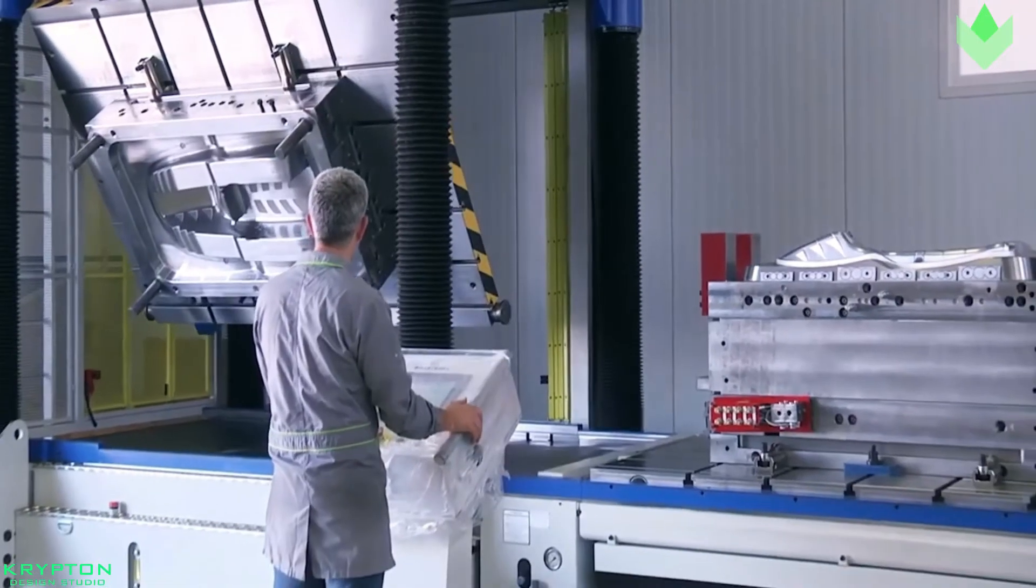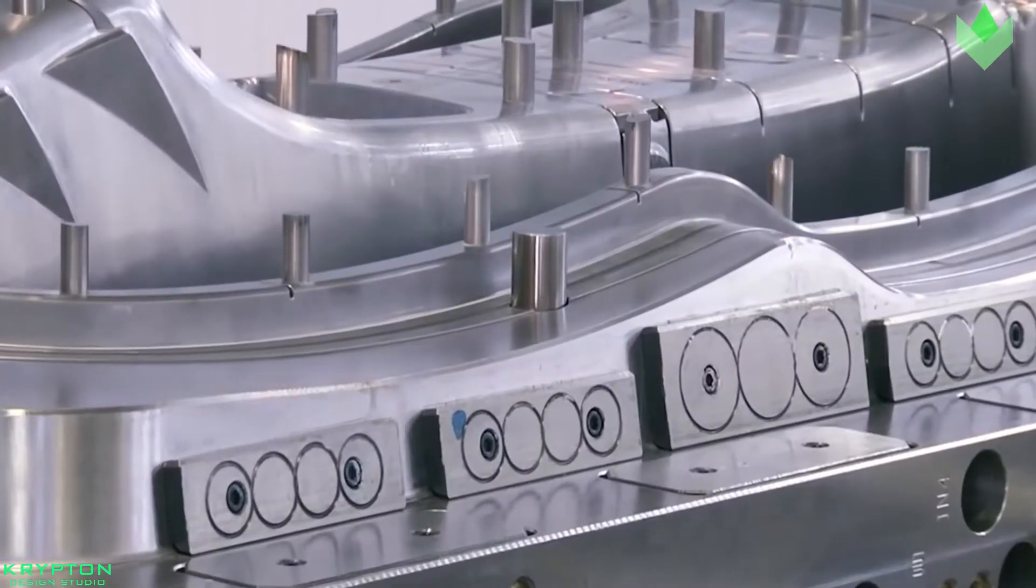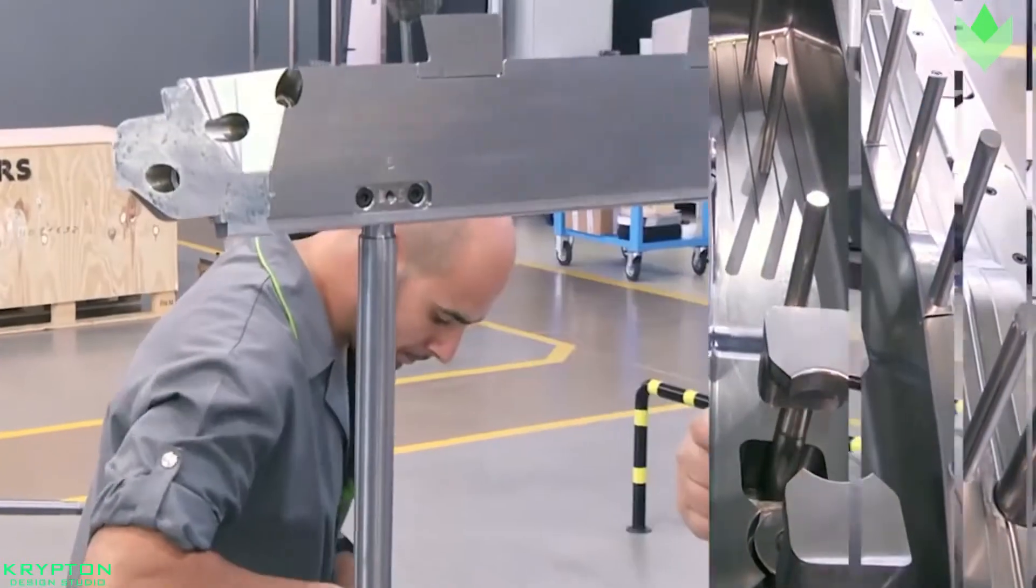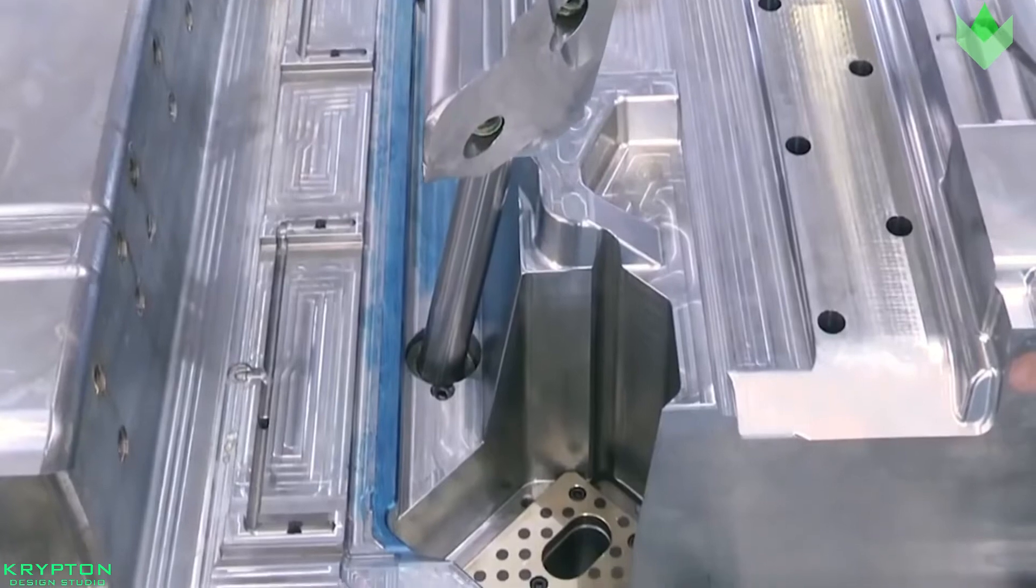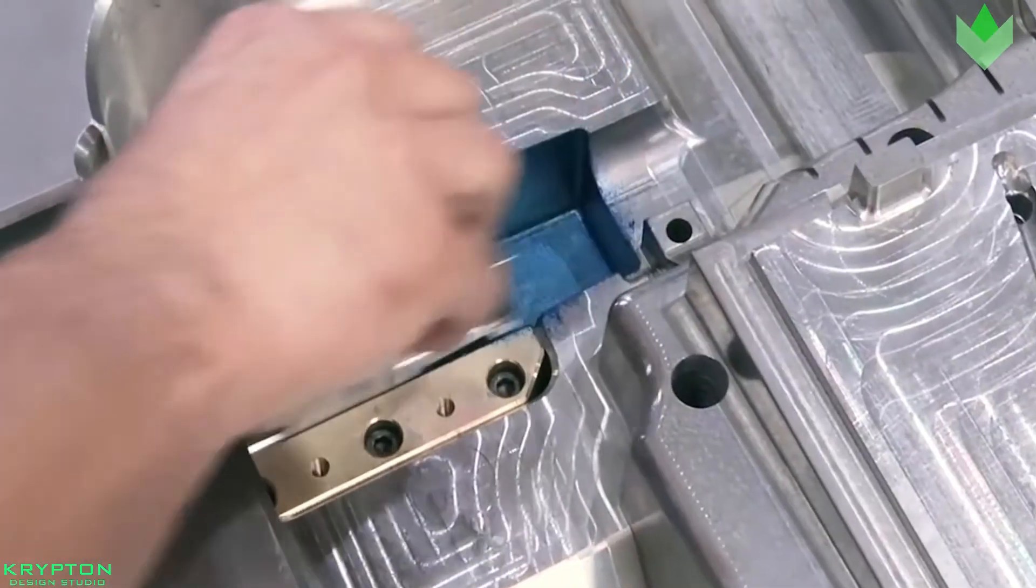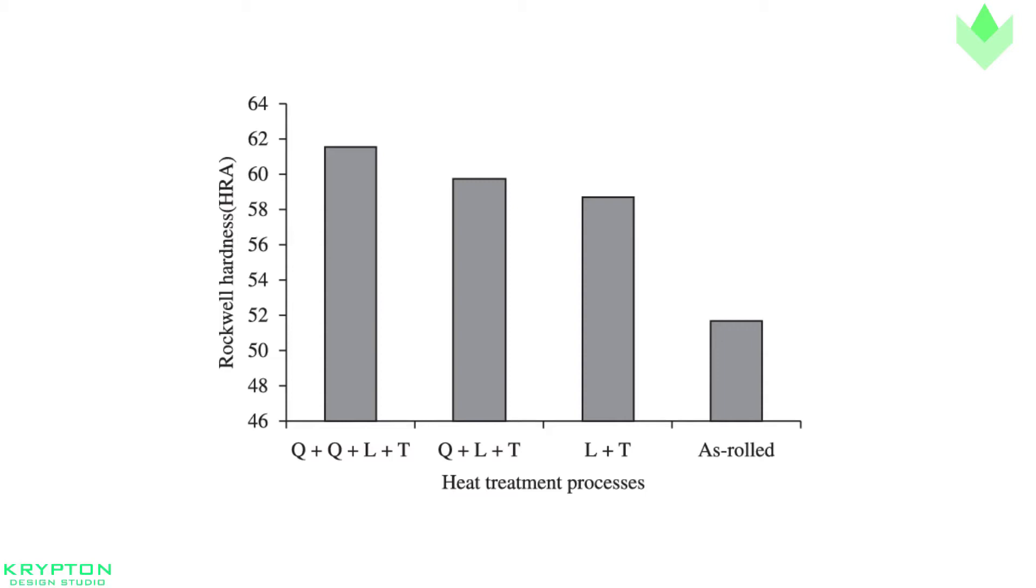The hardness of pre-hardened steel measures typically 38 to 45 on the Rockwell C scale. Hardened steel molds are heated after machining, making them superior in terms of wear resistance and lifespan. Typical hardness ranges between 50 and 60 Rockwell C.